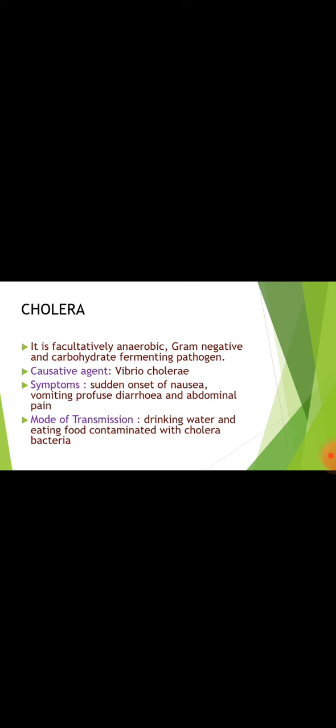Cholera: it is a facultatively anaerobic, gram-negative, and carbohydrate-fermenting pathogen. Causative agent: Vibrio cholerae. Symptoms: sudden onset of nausea, vomiting, profuse diarrhea, and abdominal pain. Mode of transmission: drinking water and eating food contaminated with cholera bacteria.